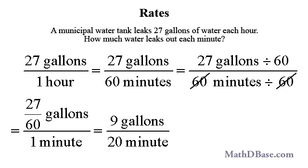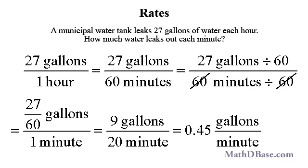Then convert to decimal form by multiplying both terms by 5 to get 45 over 100 gallons per minute, or 0.45 gallons per minute.